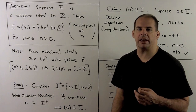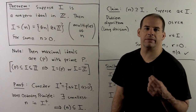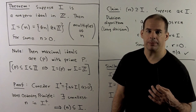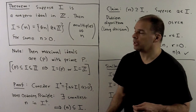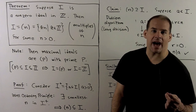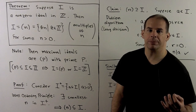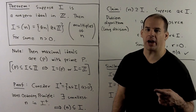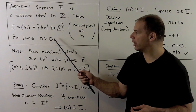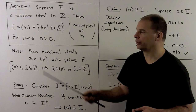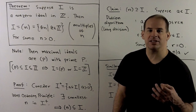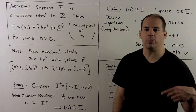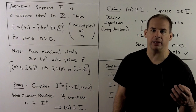To motivate principal ideal domains, we consider the following example. This result we assumed last time. Theorem: suppose I is a non-zero ideal in the integers. Then we can write I as all multiples of some fixed integer n, where n is greater than 0. We used this last time to show that all maximal ideals in the integers can be written as all multiples of p for some prime p.